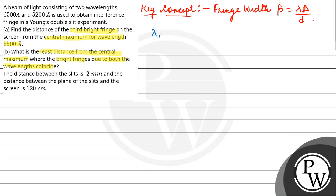Two wavelengths given are lambda 1 equals 6500 angstrom and lambda 2 equals 5200 angstrom. Distance between the slits d is 2 mm, which equals 2 × 10^-3 meters. Distance between the slits and screen is 120 cm, which equals 120 × 10^-2 meters.